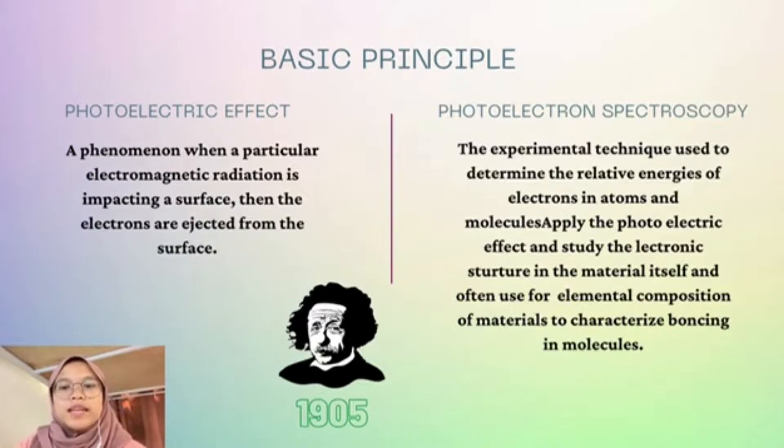Photoelectron spectroscopy is an experimental technique that is used to determine the relative energy of electrons in atoms and molecules. It applies the photoelectric effect and studies the electronic structure in the material itself and is often used for elemental composition of materials to characterize the bonding in the molecule.